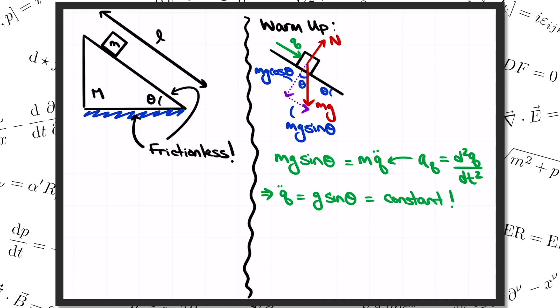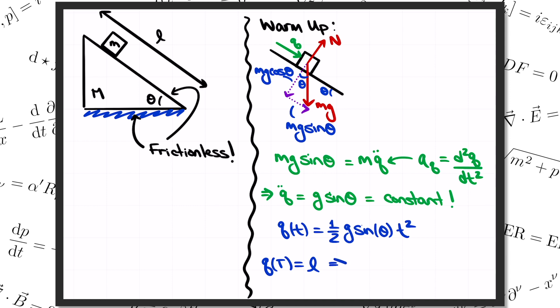Since the block started at rest at q equals zero when t equals zero, the trajectory is just one half times the acceleration times t squared. If we want to know how long it'll take for the block to hit the ground, we set q equal to the length l of the ramp and solve for time t. We get t equals the square root of 2l divided by g sine theta.